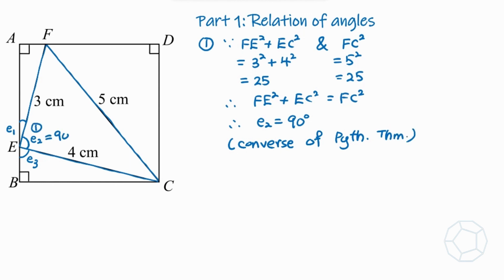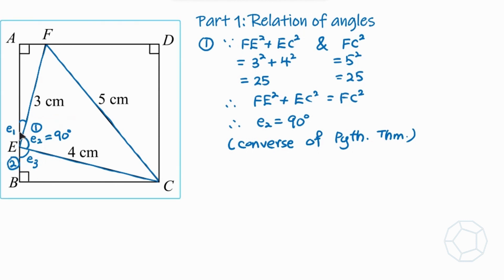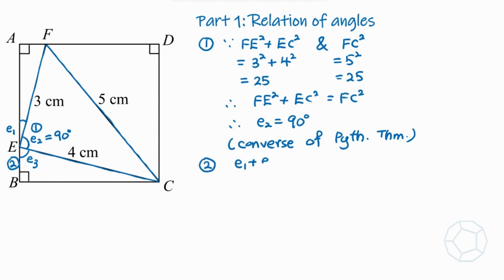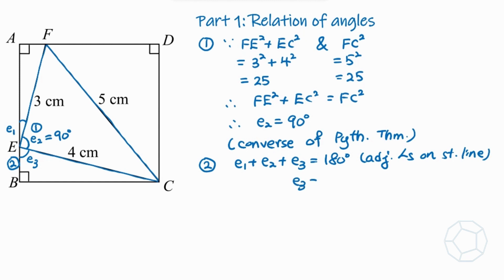Now that we have E2 = 90 degrees, the second part is to express angle E3 in terms of E1. Step two: E1 + E2 + E3 = 180 degrees, because they are adjacent angles on a straight line. Therefore E3 = 180° − 90° − E1, so E3 = 90° − E1.